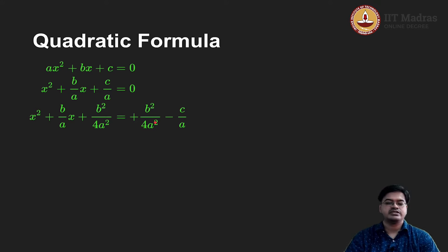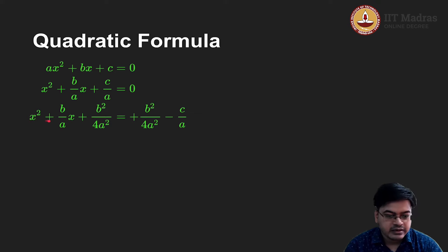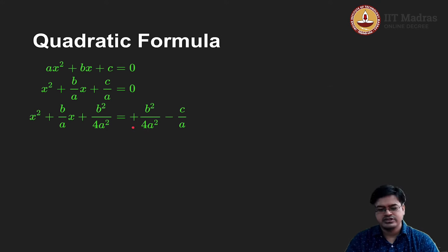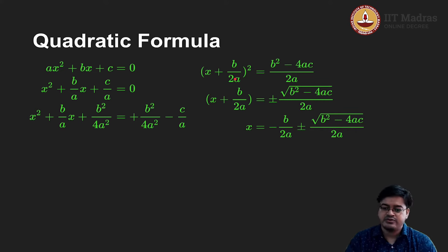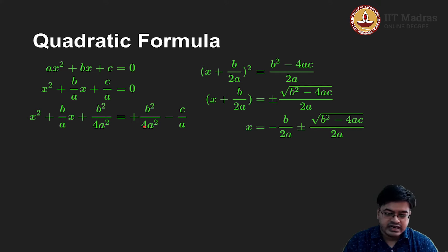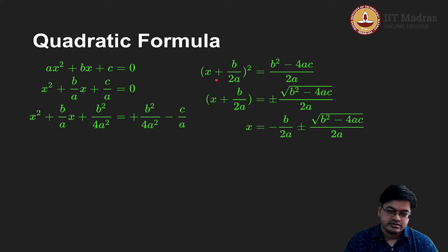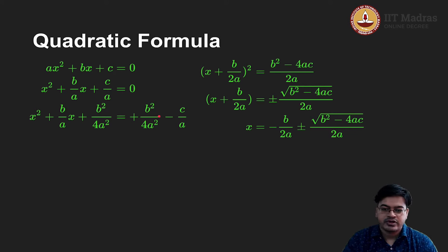Look at this expression carefully. This is (x plus b by 2a) whole squared equal to some constant. Now rearranging — 4a squared is the LCM — multiplying by 4a gives 4a squared in the denominator, and you will get b squared minus 4ac upon 4a squared. I made an error earlier: it should be b squared minus 4ac upon 4a squared.